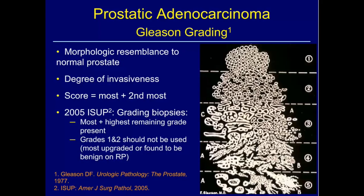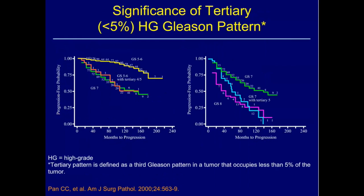We started putting the evidence together to ask: where are we, and what do these patterns really do in predicting tumor aggressiveness? We came up with two modifications. One was that grades one and two really shouldn't be used on biopsy, because most of these either weren't cancer at all when you had better tools to look at them, or they got upgraded at the time of prostatectomy.